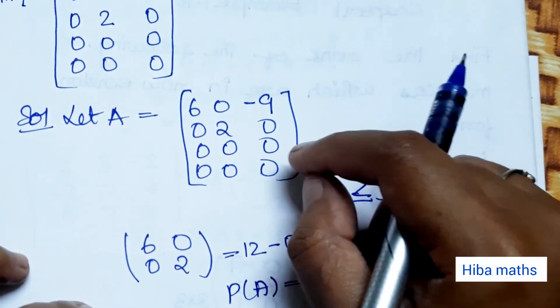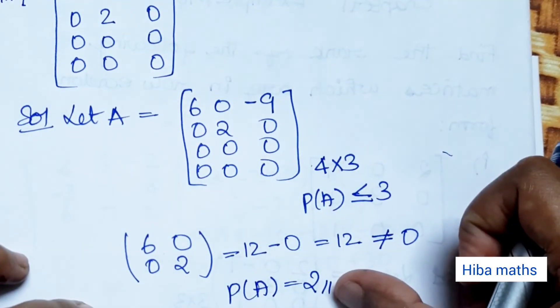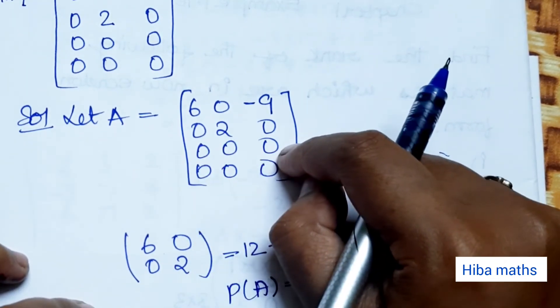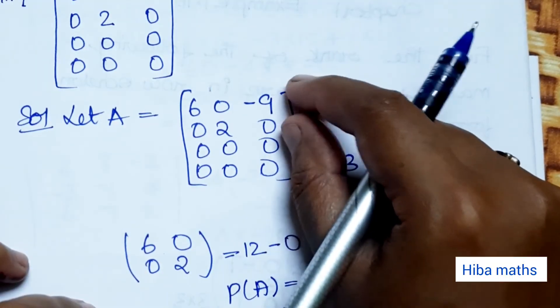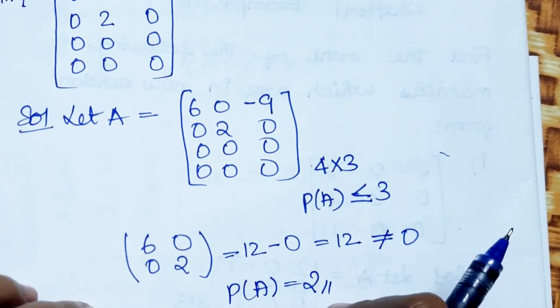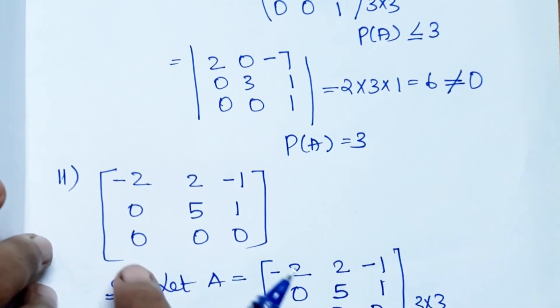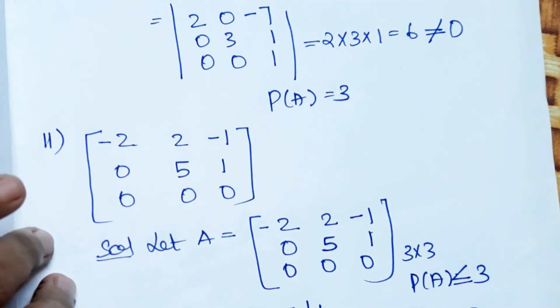In general, to find the rank of a matrix in row echelon form, we count the number of non-zero rows. The rank equals the number of non-zero rows in the matrix.